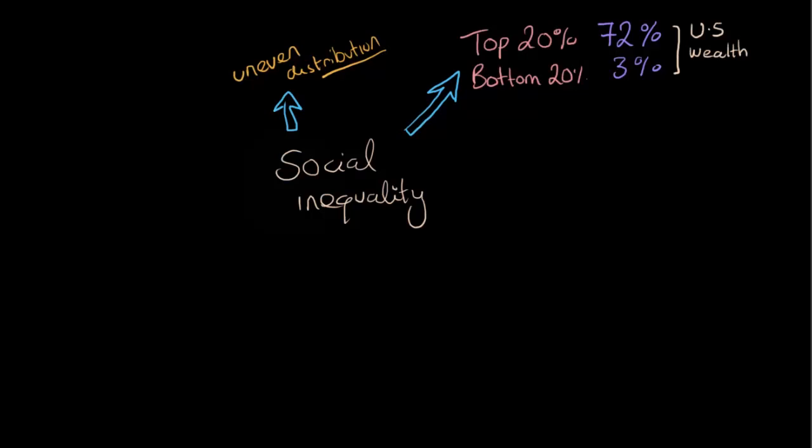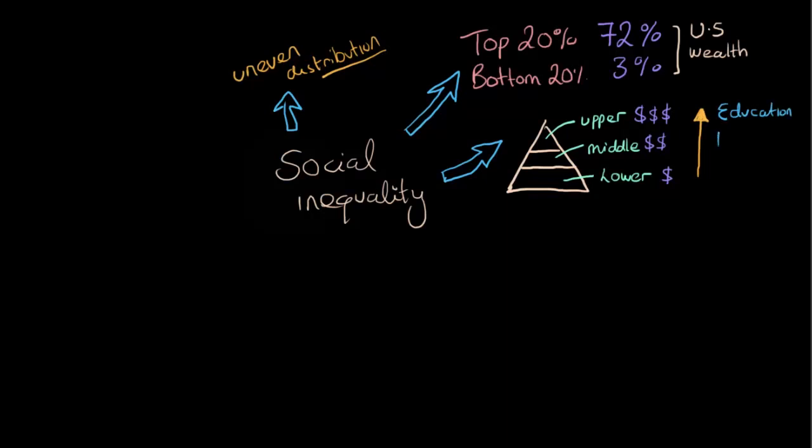When we think about social inequality, we often think about how society is structured into different classes. One of the ways we do this is by labeling society as containing the upper class, middle class, and lower or working class. These class distinctions are often made on the basis of people's jobs or incomes. As you go up the social ladder, you often have better access to quality education, healthcare, and other services such as housing or good nutrition.